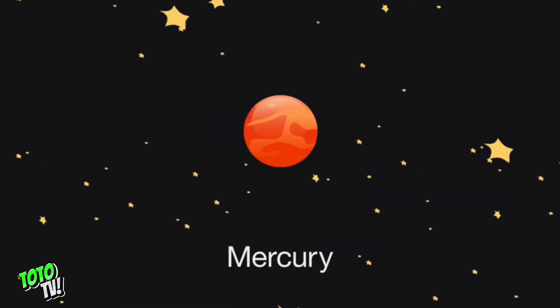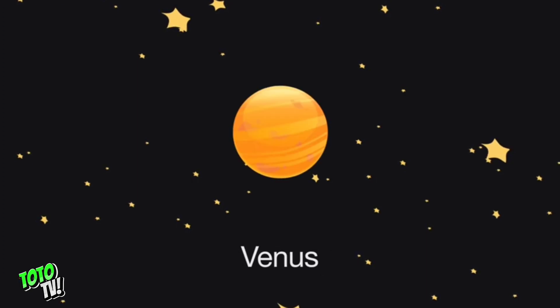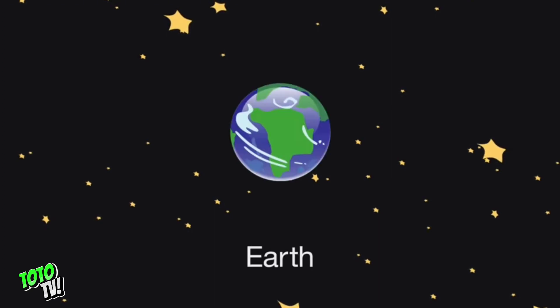Mercury is the closest planet to the Sun. Venus comes next, and it's the hottest one. Earth comes third, the only planet having life.